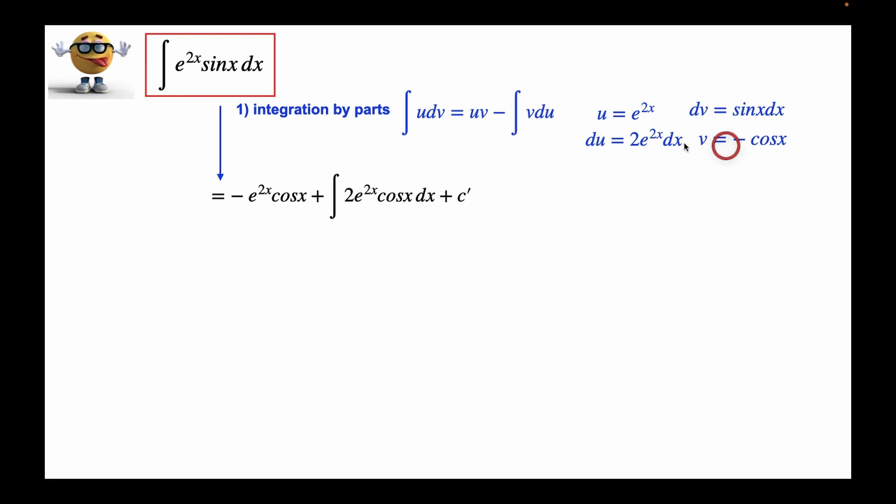And notice that v and du, there's a negative here, so this negative cancels out with this negative to make it positive right here, and this is our integration constant c prime.